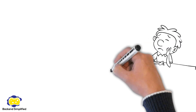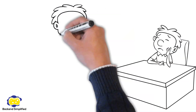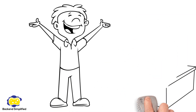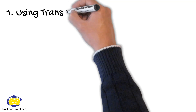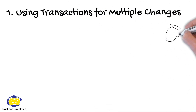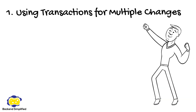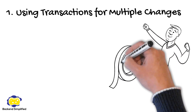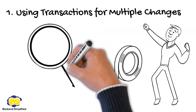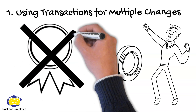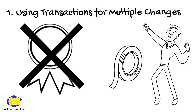Alright, that's enough theory for now. We've got two practical tips coming up that will make your life a whole lot easier. The first one is using transactions for multiple changes. When you have multiple related changes in a single migration file, consider using transactions. Transactions help ensure that either all queries in the migration succeed or none at all, avoiding intermediate states that can lead to data inconsistencies.